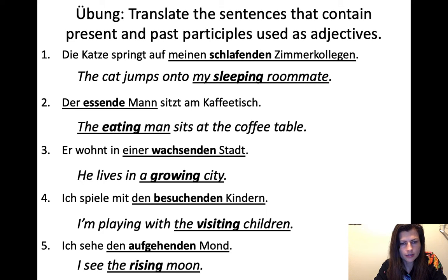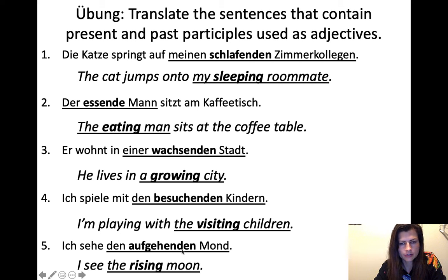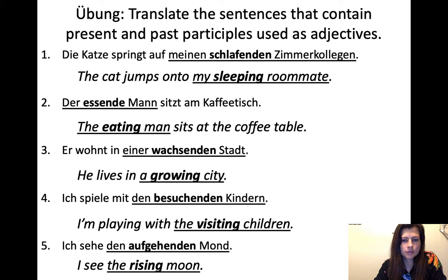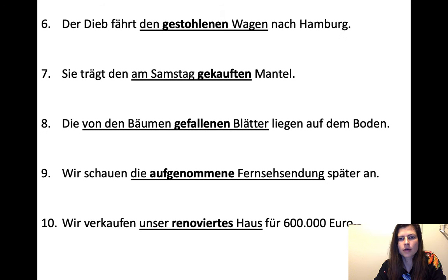Ich sehe den aufgehenden Mond. The whole thing is a direct object, and aufgehen means to rise, to go up. There's the -d for the present participle, and then the accusative masculine ending. I see the rising moon.